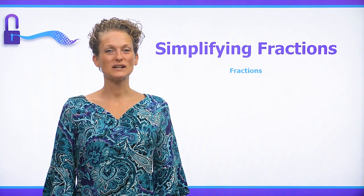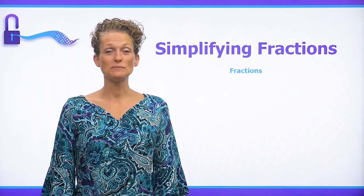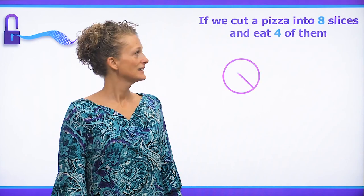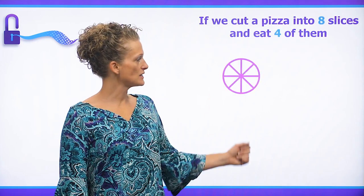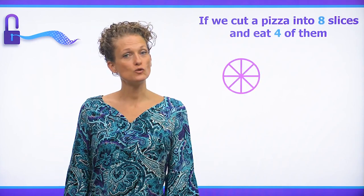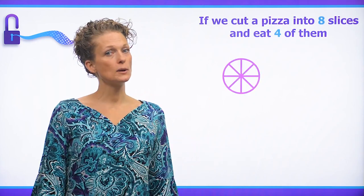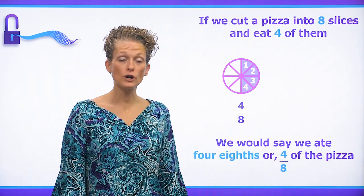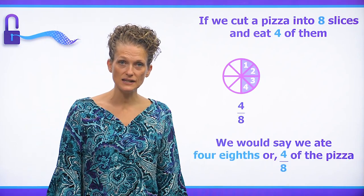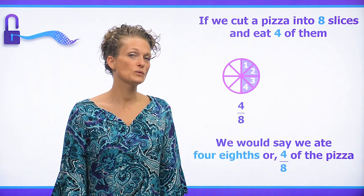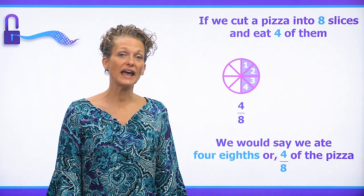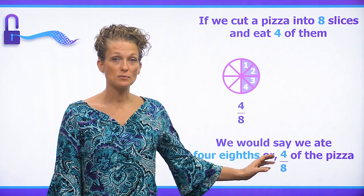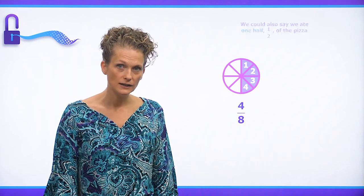In today's lesson, we are going to talk about simplifying fractions. If we take a pizza and we divide it into eight equal pieces, and then we eat four of those pieces, we say that we ate four eighths of the pizza, which is represented by the fraction four over eight.